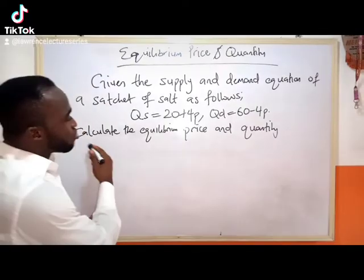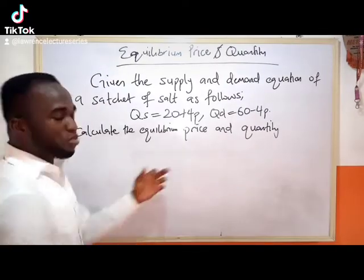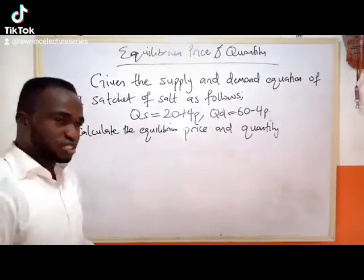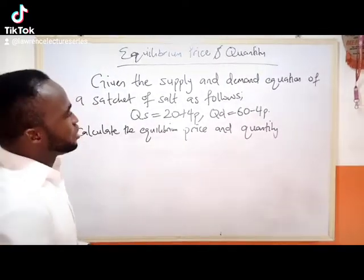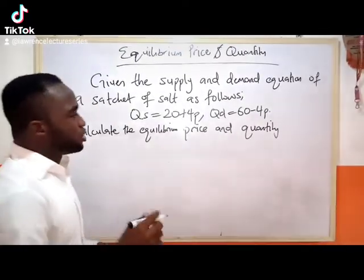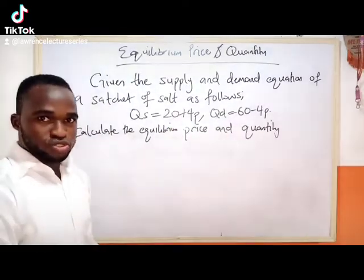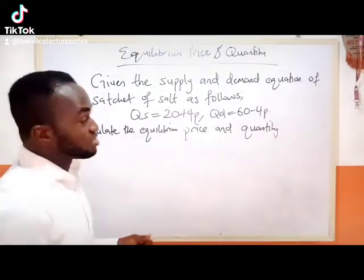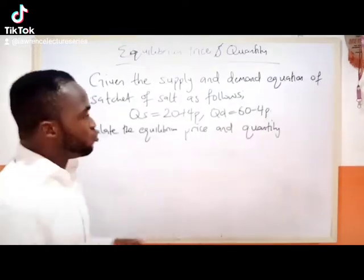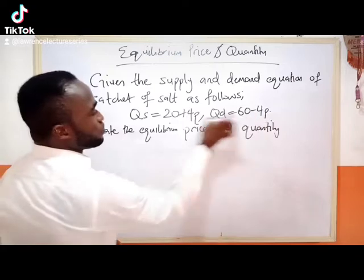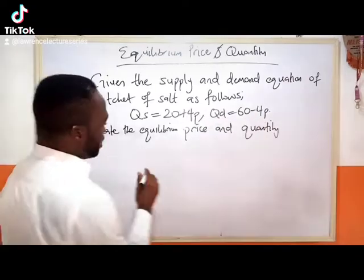Now this is how we calculate the equilibrium price and quantity. What we need to do is to equate these two functions, because that is the essence of equilibrium — we equate these two different functions.